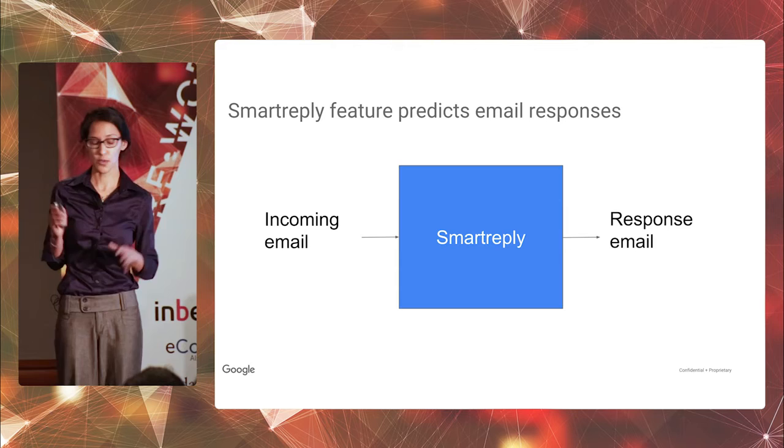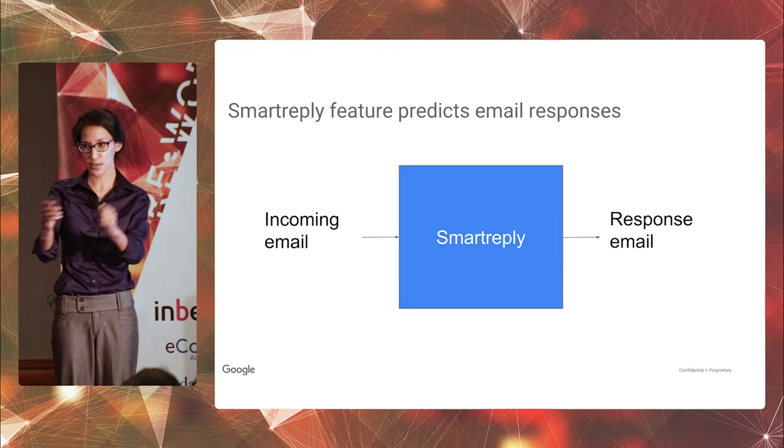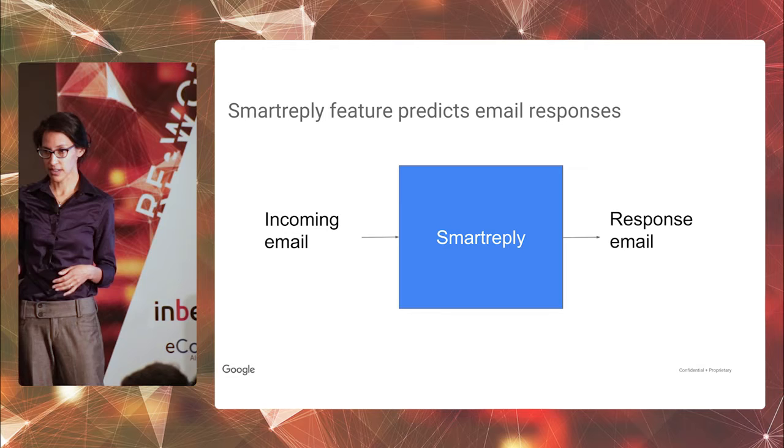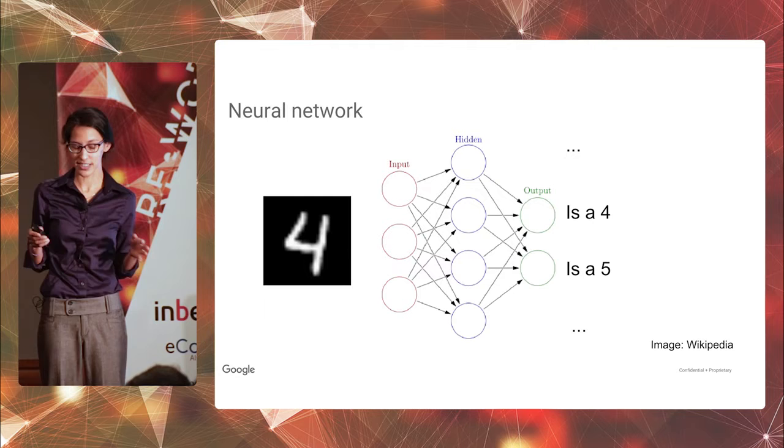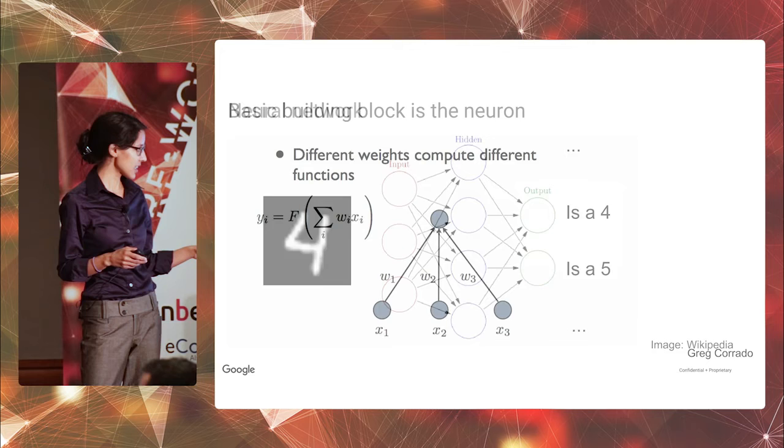So for this project, the model we built, basically the problem is Smart Reply feature gets an email coming in, then has to compose an email going out. So it's pretty simple. Email in, email out. The model we built was a neural network, also known as a deep learning model. And given that there's a deep learning summit going on downstairs, I'm guessing that by now all of you have heard of neural networks. But I'm just going to give a really quick refresher just in case.